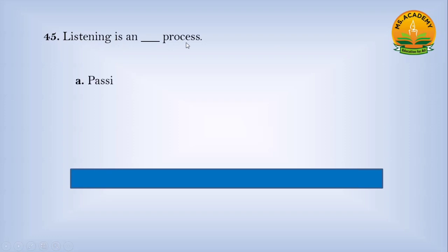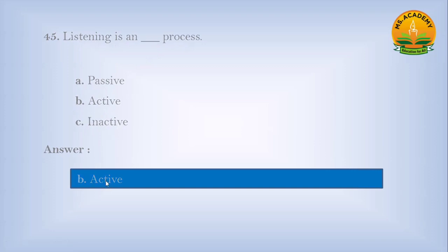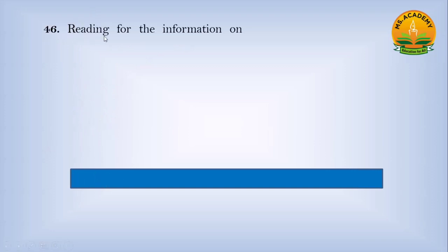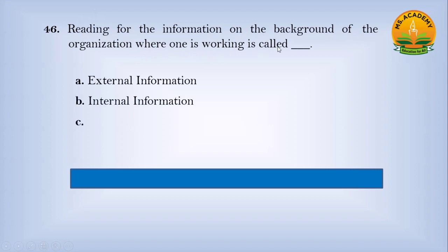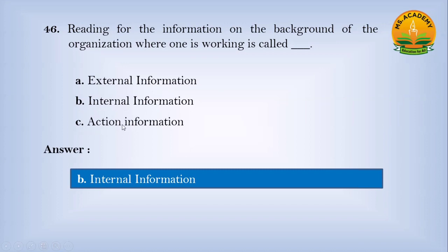Listening is a dash process. Option A Passive, option B Active, option C Inactive. Answer: B. Number Active process. Reading for information on the background of the organization where one is working is called dash. Option A External information, option B Internal information, option C Action information. Answer: B. Number Internal information.